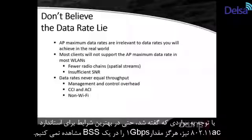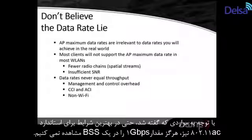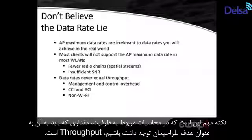Because of all of this, even with 802.11ac Wave 2 wireless LANs, you rarely see anything close to 1 gigabit per second in a BSS today. When we're talking about throughput as opposed to data rate — what we can actually achieve — that's the key factor for capacity planning, and that's what we have to keep in mind when designing a capacity plan.